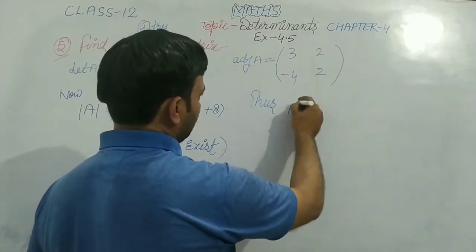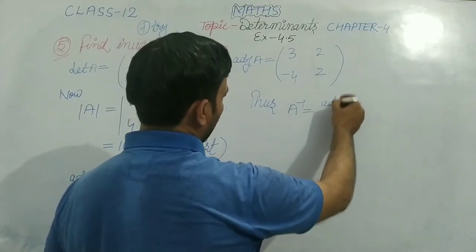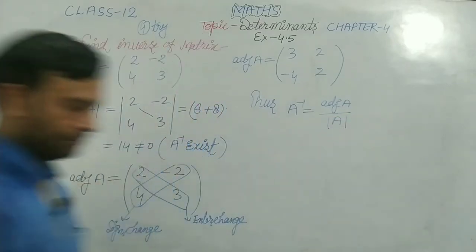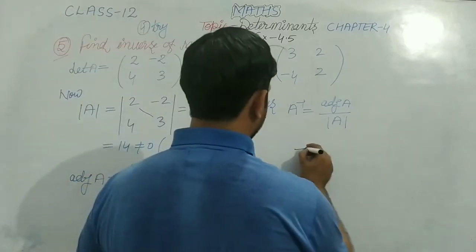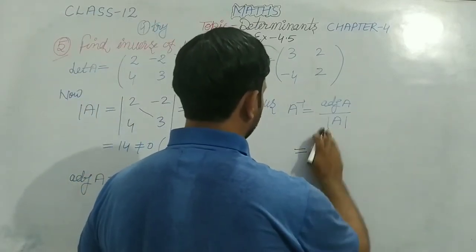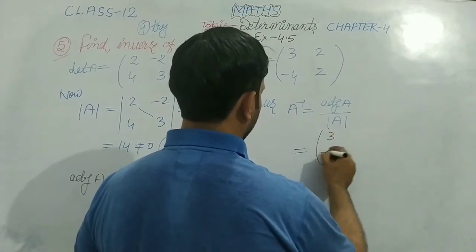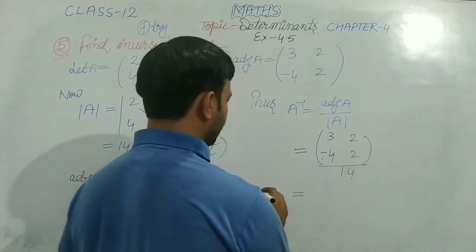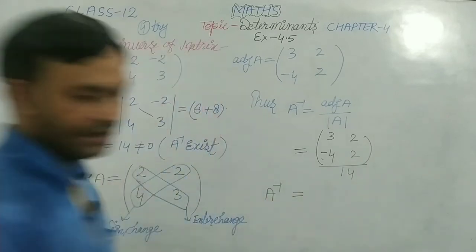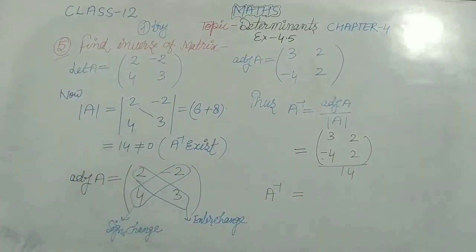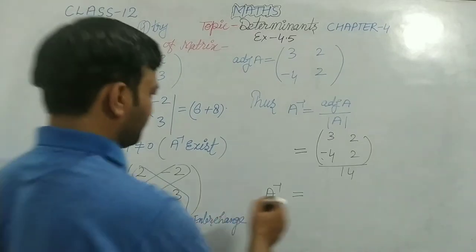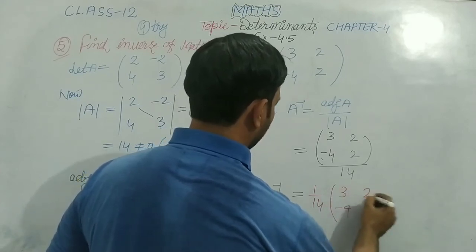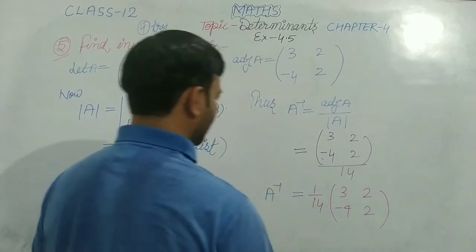A inverse equals adjoint of A over the determinant of A — that is the formula for A inverse. So we can write: A inverse equals 1 over 14 times the matrix 3, negative 4, 2, 2.